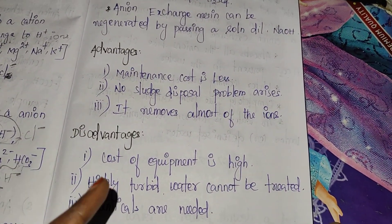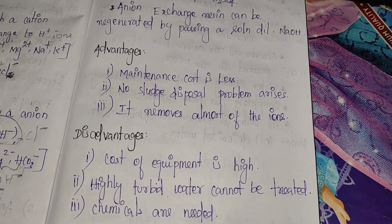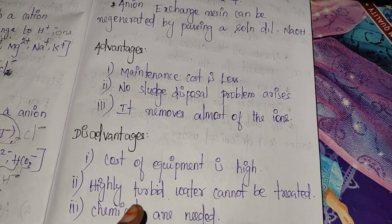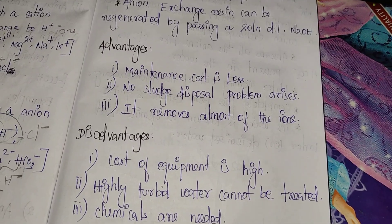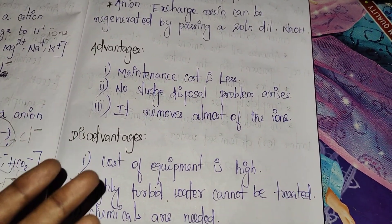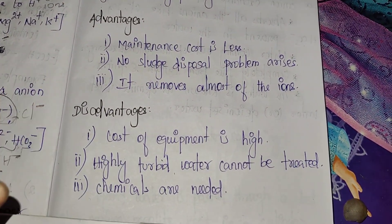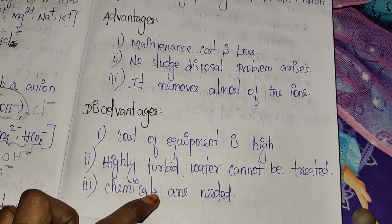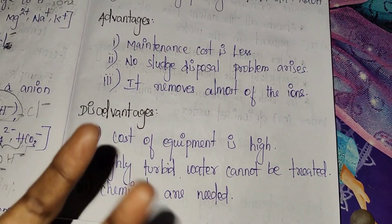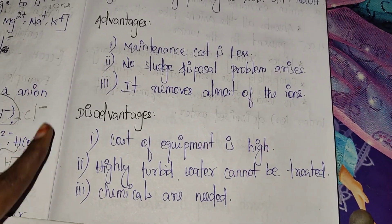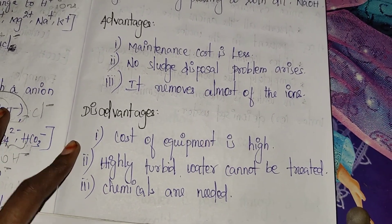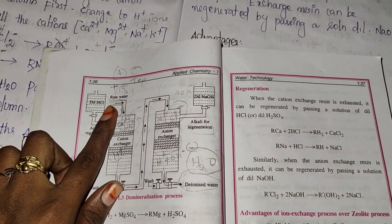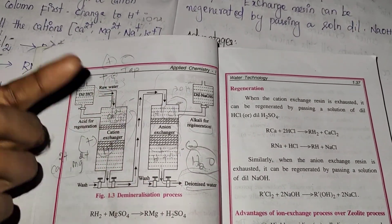Disadvantages of the ion exchange process: the cost of equipment is high, highly turbid water cannot be treated, and chemicals are needed for regeneration.